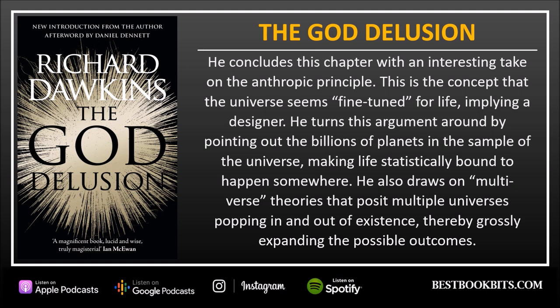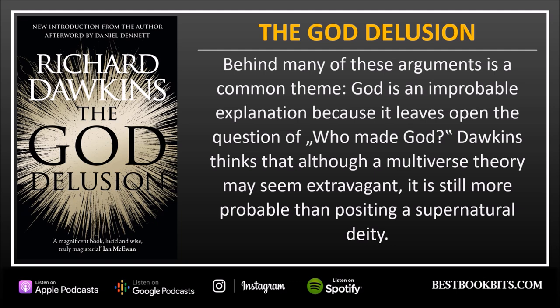Dawkins also draws on multiverse theories that postulate multiple universes popping in and out of existence, thereby grossly expanding the possible outcomes. Behind many of these arguments is a common theme: God is an improbable explanation because it leaves open the question of who made God. Dawkins thinks that although a multiverse theory may seem extravagant, it is still more probable than positing a supernatural deity.